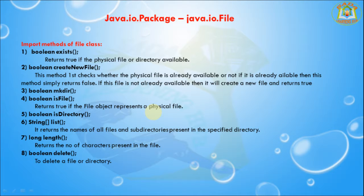isFile() returns true if the File object represents a physical file; otherwise returns false. isDirectory() returns true if the File object represents a physical directory; otherwise returns false. list() returns a String array containing the names of all files and subdirectories present in the specified directory. length() returns the number of characters present in that file. delete() returns a boolean value and is used to delete a file or a directory.